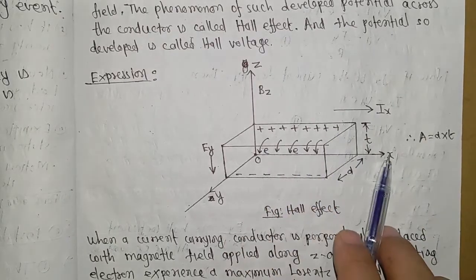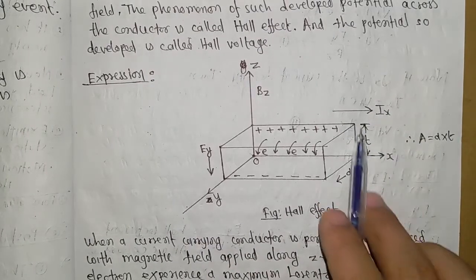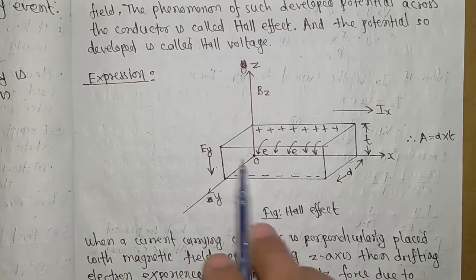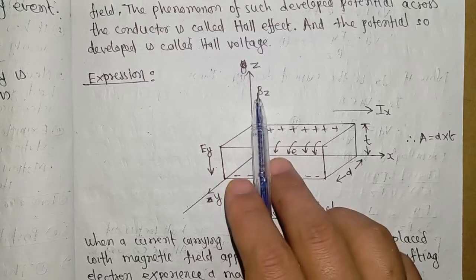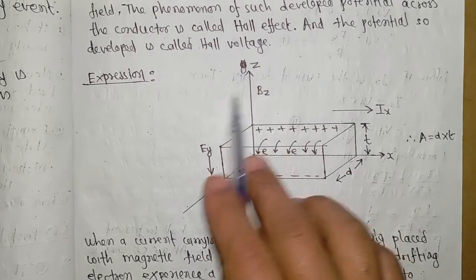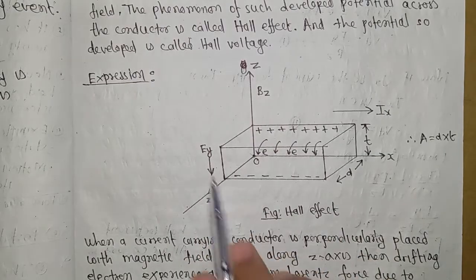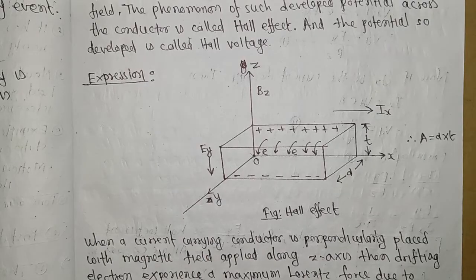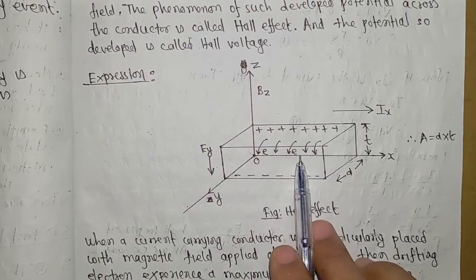Current I flows along the x-direction. The conductor has thickness t along the z-axis. The magnetic field Bz is applied in the z-direction. This creates an electric field intensity and potential EY in the y-direction.